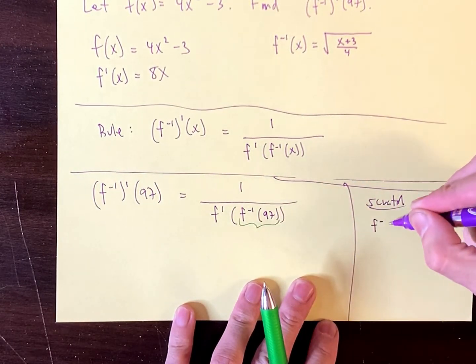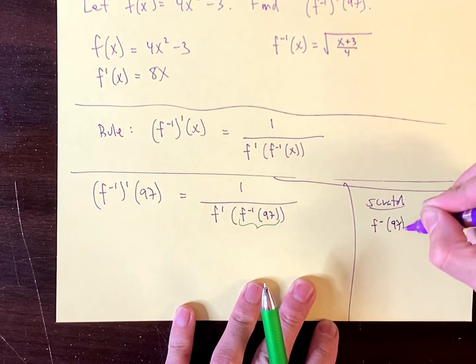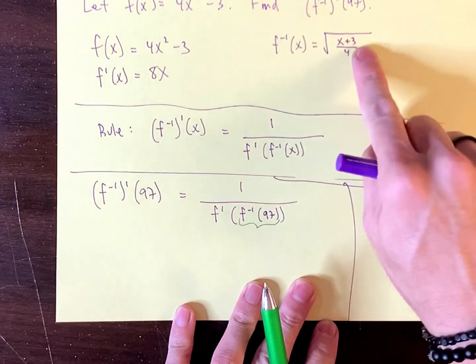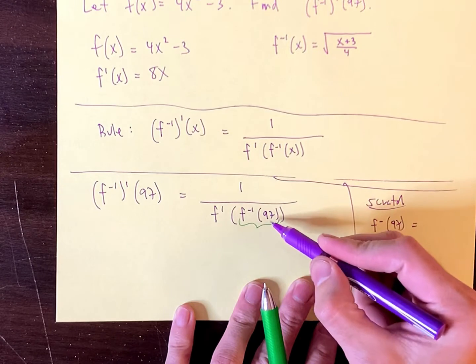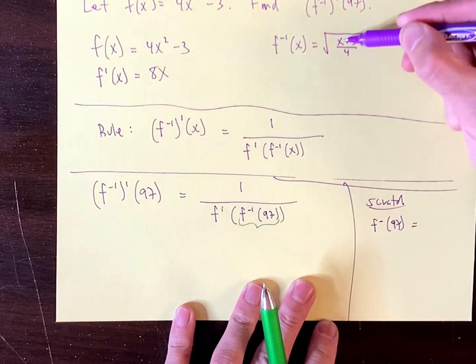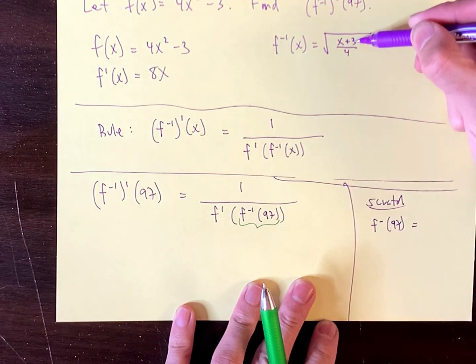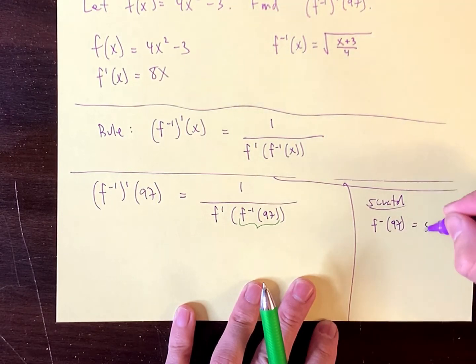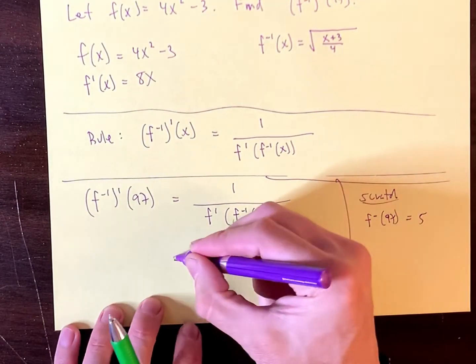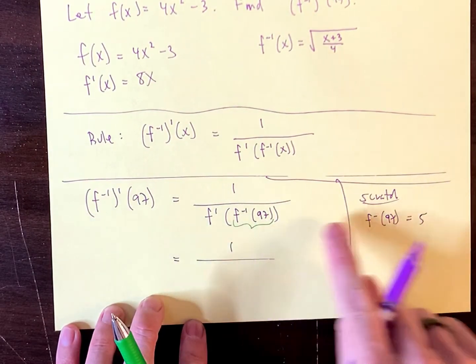What is f inverse of 97? Well, we have the inverse right here. Let's plug 97 into there. And we can do mental math this afternoon. 97, plug them there into the inverse. 97 plus 3 is 100 over 4 is 25. Square root of this is 5. So what I'm saying is here, the green gets replaced by 5.